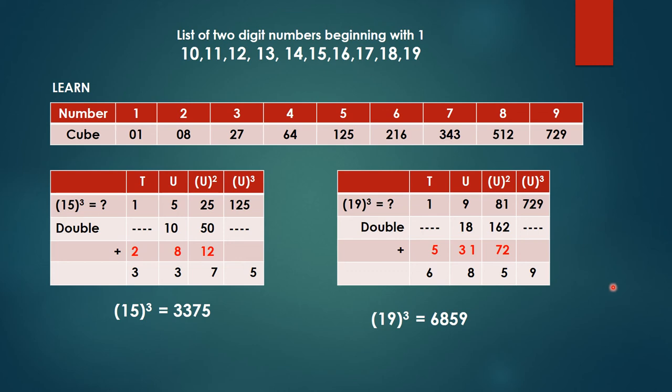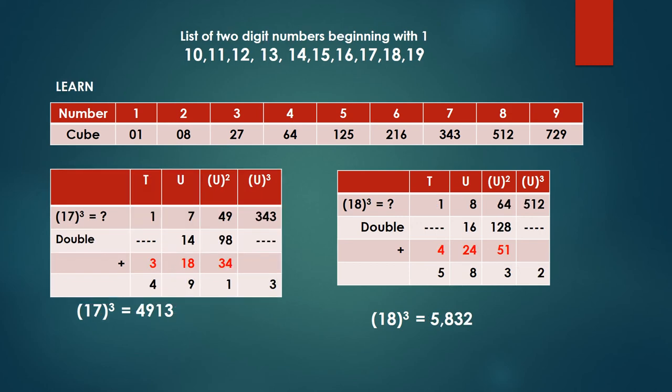So 5 plus 1 gives us 6. So 6, 8, 5, 9 is the answer. So 19 cube or cube of 19 is equal to 6859. Let's see two more examples.